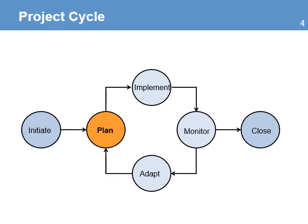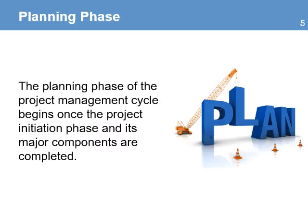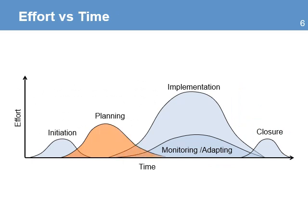In the project cycle, the planning phase receives input from the initiation and adapting phases and then provides input to the implementation phase. The planning phase begins once the project initiation phase and its major components are completed, but there's no need to stop working on the planning phase to start some implementation activities. It takes a considerable amount of time and effort before we begin the implementation.